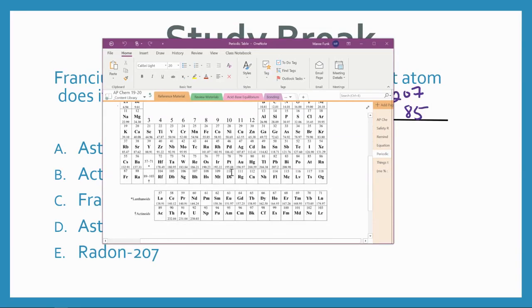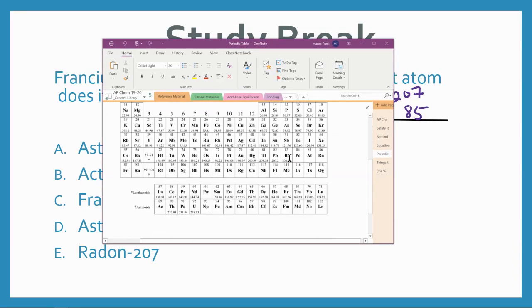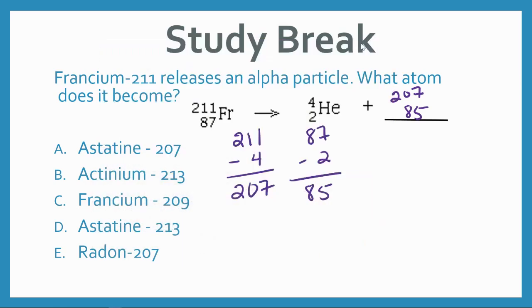So we need to look up what is atomic number 85. Let's look at our periodic table, atomic number 85, A-T. So that's Astatine-207.